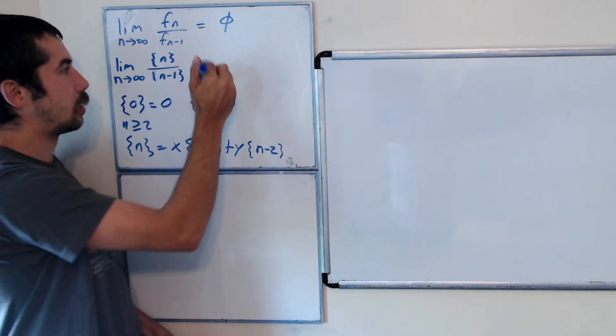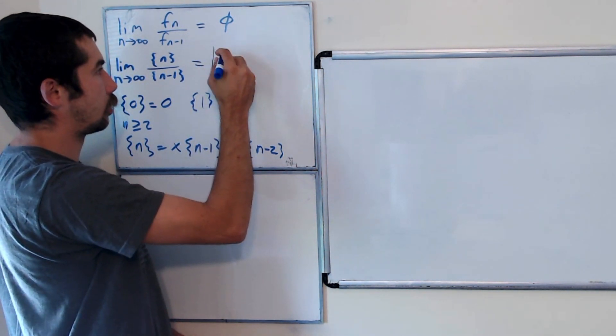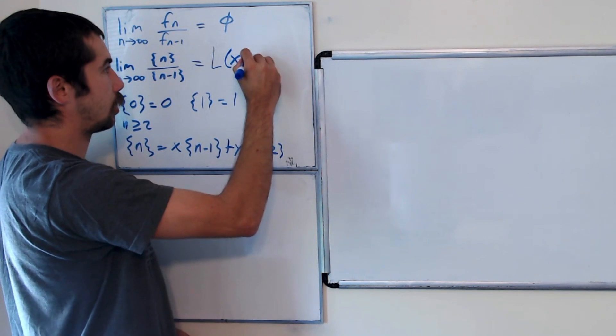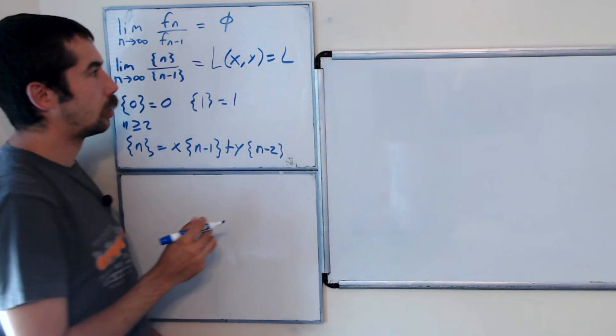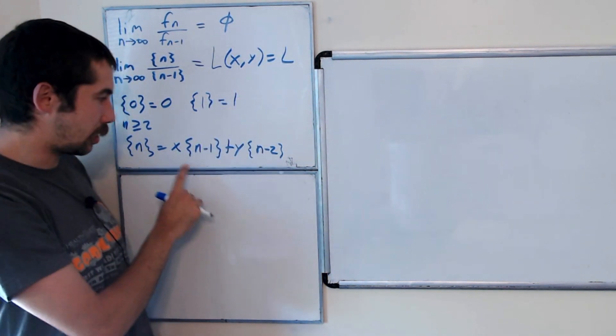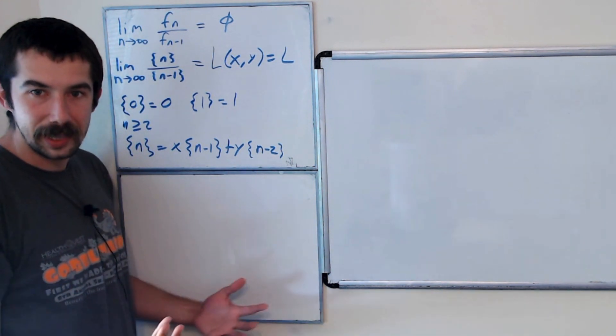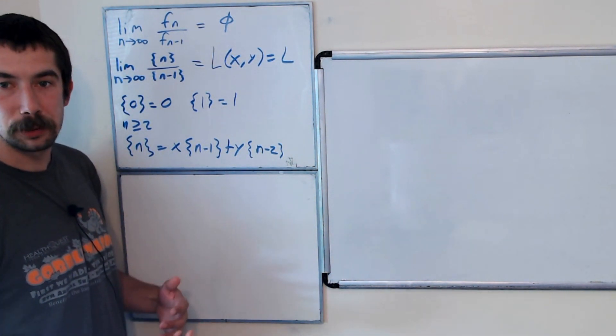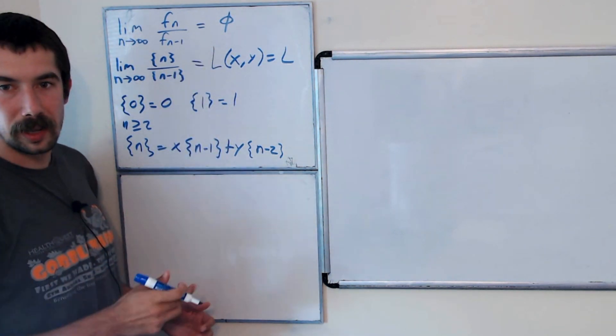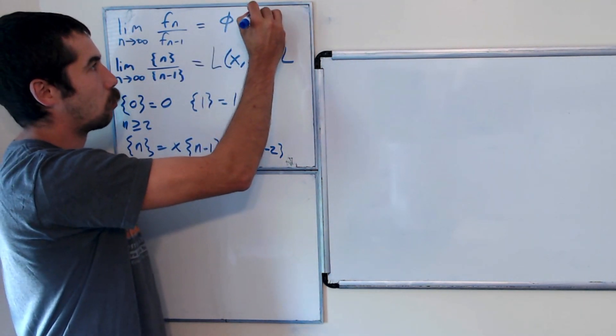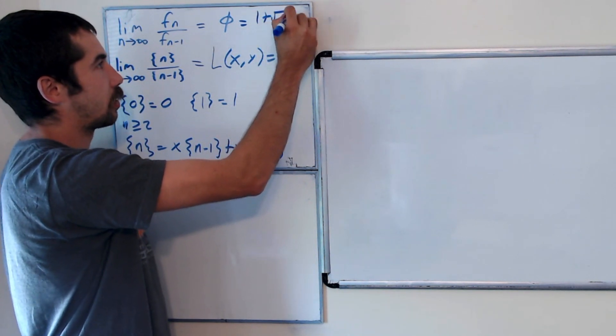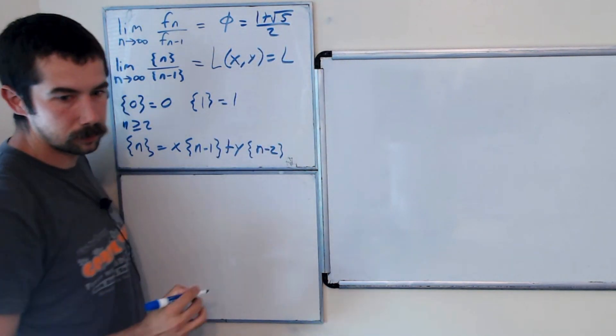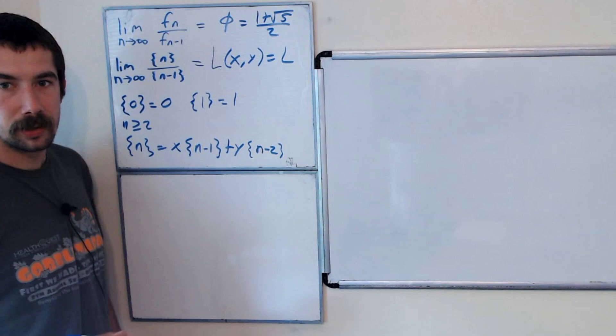So let's call this limit L of x, y, or just L for short, because it's going to depend on our choice of x and y. And hopefully at the end, when we get a formula, if we plug in x equals 1 and y equals 1, we should end up with the golden ratio. And just as a reminder, that's equal to 1 plus the square root of 5 over 2.